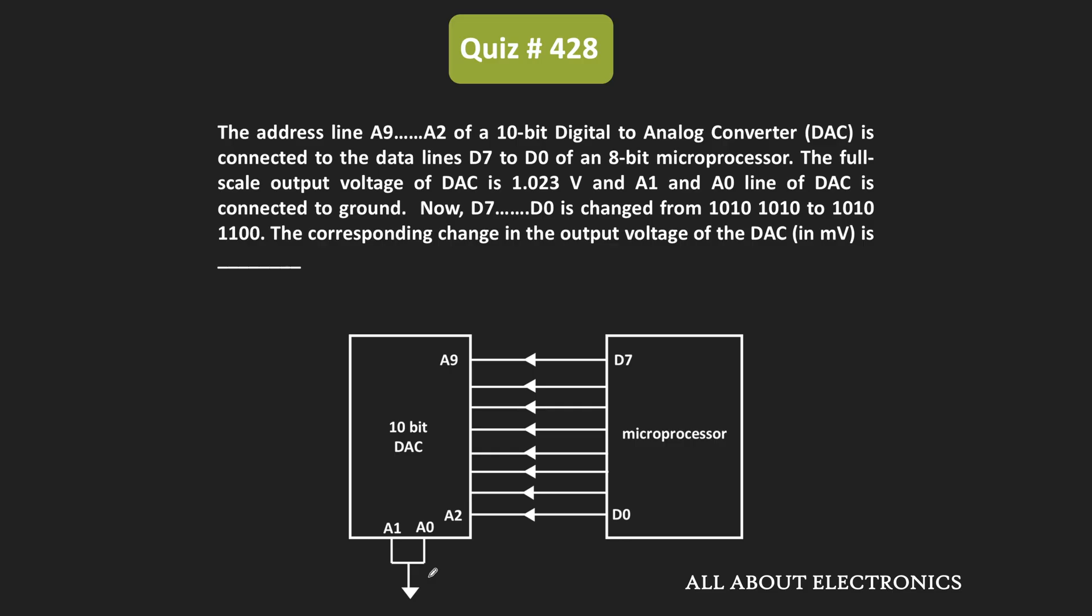Hey friends, welcome to the YouTube channel All About Electronics. In this question, as you can see, the microprocessor has been interfaced with the 10-bit DAC. The 8 data lines of the microprocessor have been connected to the DAC.